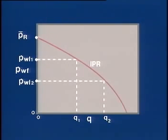This curve is called the Inflow Performance Relationship, or IPR curve.